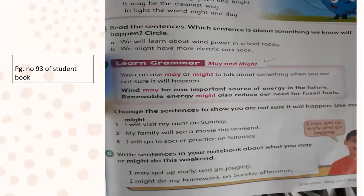Come to page number 93 of your student book. Write down classwork, day, and date. May and might is given there — write on Friday's date. Yesterday was the 16th of October 2020, and it was Friday, so write on yesterday's date.